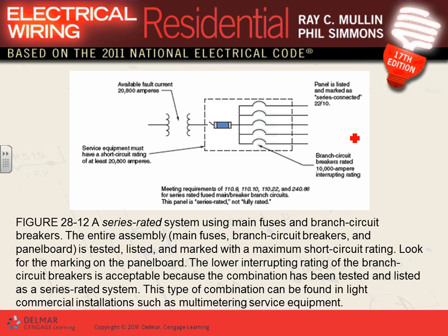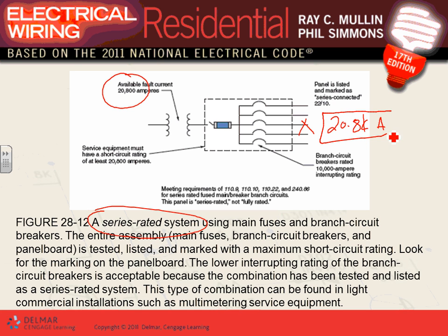Now, series rated: I have a 13,800-amp available short circuit. The main is rated for 22,500 amps, but all the branch circuit breakers are rated for only 10,000 amps. They call it series rated coordinated — the manufacturers test these circuit breakers and fuses together. By design, if the short circuit exceeds what the branch breakers can handle, they hold and let the main take care of business.